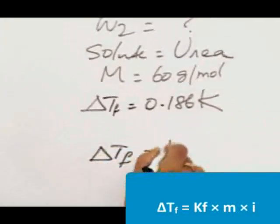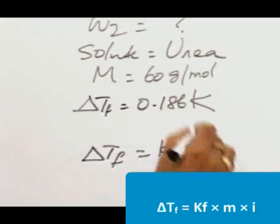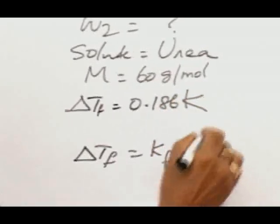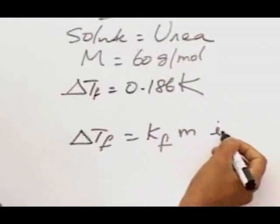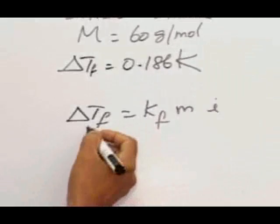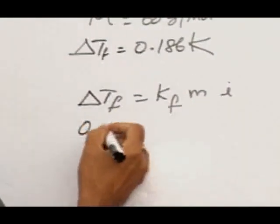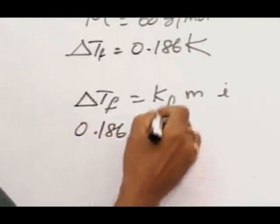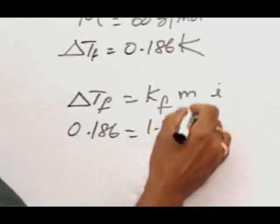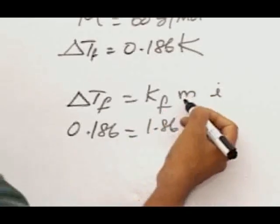And now delta Tf is given as 0.186 and Kf value is 1.86, and this molality, so here we have to substitute the other values because weight is given. The weight W2 is what we are going to calculate.